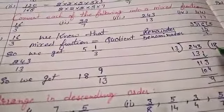Next third part is 243 divided by 13. When we divide it, quotient is 18 and remainder is 9. So we get 18 whole 9/13.